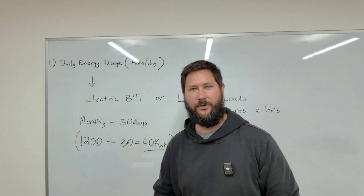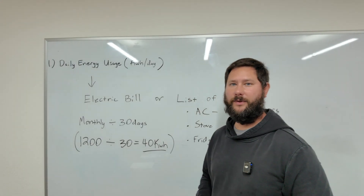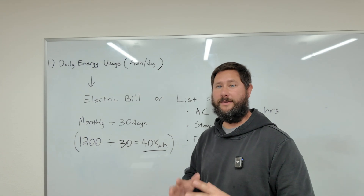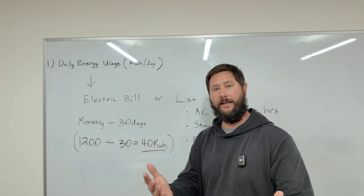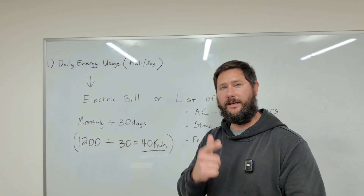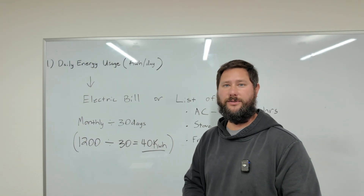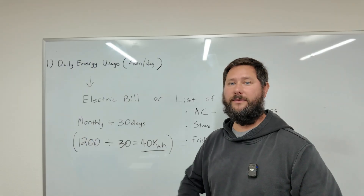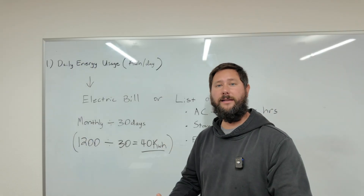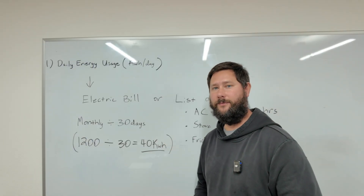Daily energy usage — how do we figure it out? One way is to take your electric bill, look at the monthly kilowatt hour usage and divide it by 30. That'll give us our daily kilowatt hours.